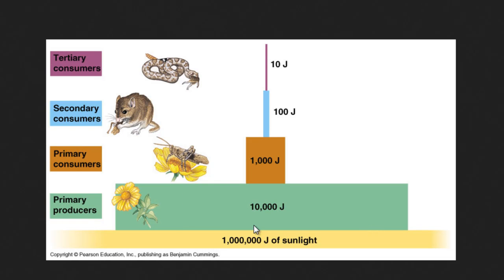For example, we've got a field of flowers that has 10,000 units of energy captured, but only 1,000 of that is being captured by the grasshoppers that live in that area. The reason for that is the grasshoppers aren't consuming all of this plant, and the plant has used up energy and lost it as heat as it's grown, as it's created roots, as it's produced seeds. A lot of the energy that goes into a plant does not get passed directly on through the food web. Now your grasshoppers go through their life cycle — they hop around a lot, they produce eggs, they go through reproduction. When they get eaten by the mouse, not all that energy is collected.